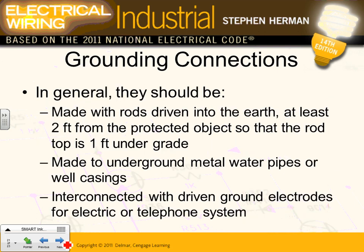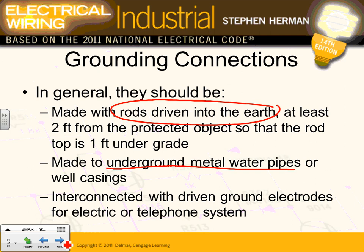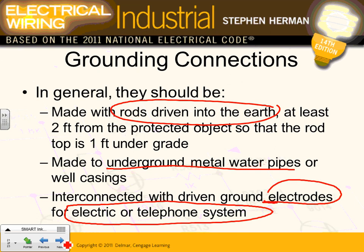For grounding: rods are driven into the ground — typically 3/4-inch by 10-foot rods — at least two feet from the protected object, with the rod top about a foot under the ground. You can also use underground metal pipe casing as your grounding electrode. Most importantly, you interconnect your grounding electrode system for the building's electrical utilities with your grounding electrode system for the lightning. All will be interconnected with at least a number 6 conductor.